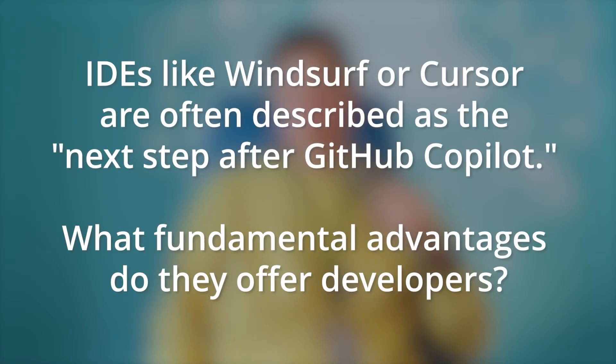IDEs like Windsurf or Cursor are often described as the next step after GitHub Copilot. What fundamental advantages do they offer developers? It's all about usability. The first step is just generating code in ChatGPT or another LLM with prompting and injecting your context manually. The next step is automatically injecting context — your existing code. With fully fledged AI IDEs, they go further: they can execute actions on your behalf, not only creating and modifying files in your codebase, but running terminal commands to commit, test, deploy — the full cycle.